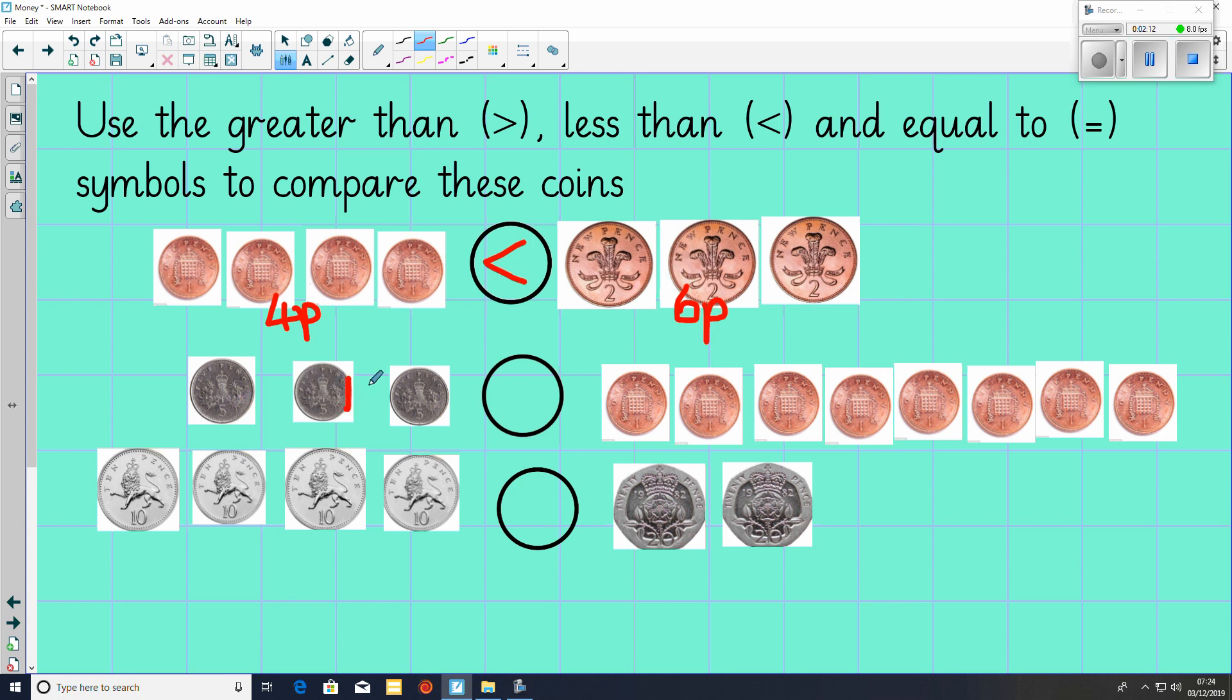Then we've got 3 5p's, so that will be 5, 10, 15. And on the other side, we've got 1, 2, 3, 4, 5, 6, 7, 8. 8 1p's, which is 8p. You should have 15p is greater than 8p.